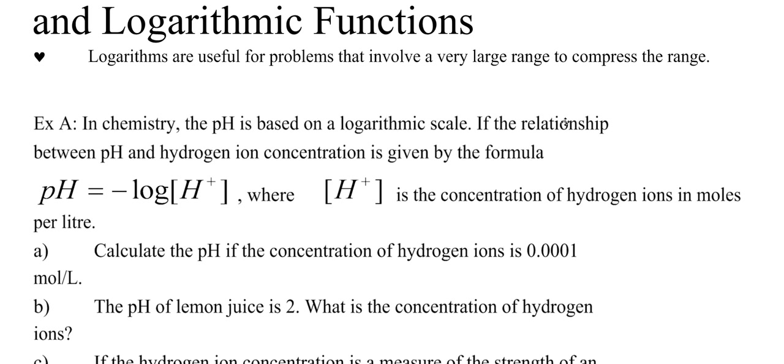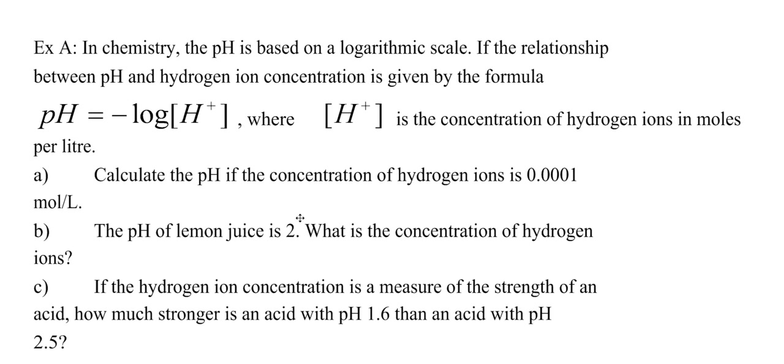In chemistry the pH is based on a logarithmic scale. By the way, I just wanted to say that you don't need to know chemistry. You don't have to be taking chemistry in order to do well in this section. We will give you the formulas, you don't have to worry about it, so don't bother memorizing tons and tons of formulas. You only have to be able to apply the knowledge that we've given you here. In chemistry, pH is based on a logarithmic scale. If the relationship between pH and hydrogen ion concentration is given by this formula, then calculate the pH if the concentration of hydrogen ions is 0.0001 moles per liter.